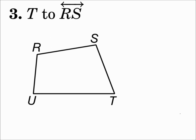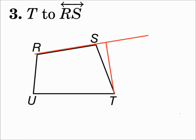Number 3: From point T to line RS. If I try drawing inside the shape, it doesn't work because I can't get a right angle, so I'm going to have to extend line RS. Now I can draw straight to the line, and that does hit the line at a right angle. Remember, if you can't draw inside the shape, extend the line and draw outside the shape.